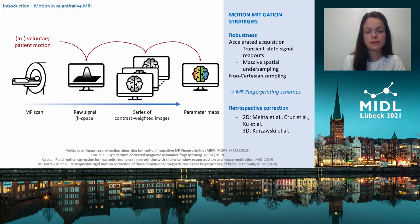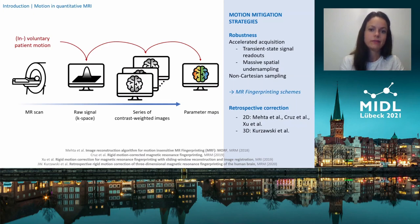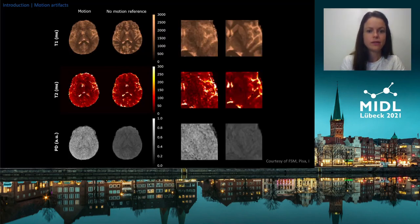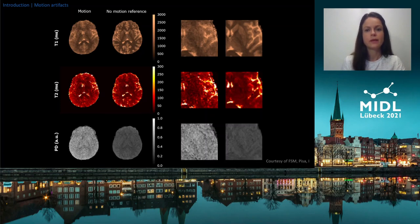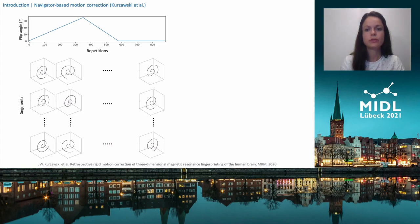To realize what motion artifacts actually mean in clinical practice, let's leave the theoretical view aside for a moment and have a look at these quantitative maps of T1, T2, and proton density that we obtained with the 3D QTI framework. This is an example where a volunteer was asked to move their head during the acquisition, with a motion-free reference shown in the right column.